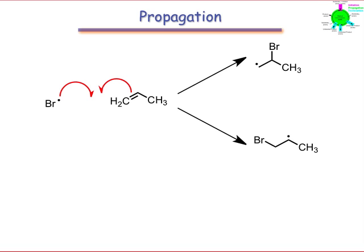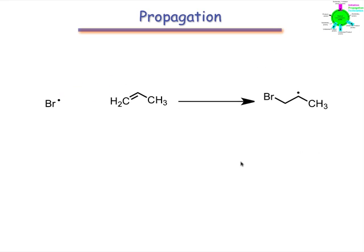Based on what we've learned about radical stability trends, this should be an easy choice. The radical prefers to be stationed on the more substituted secondary position. We need to quench this radical intermediate with an H atom to produce the observed product.